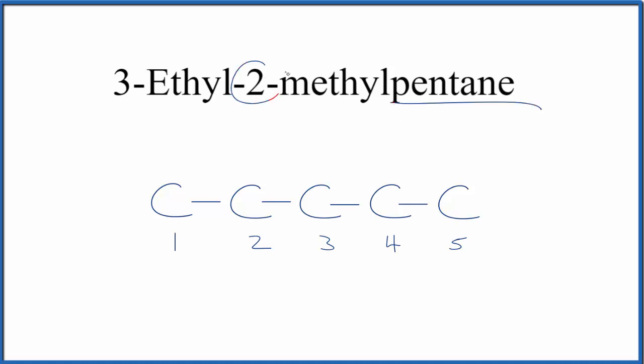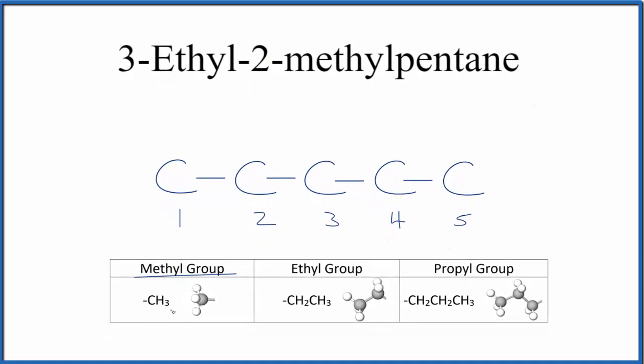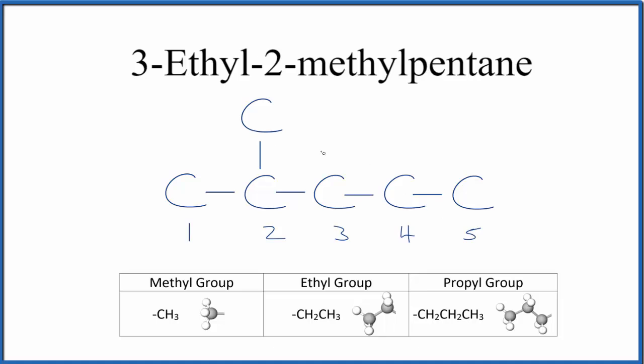We can see then that on the second carbon, carbon number two right here, we have a methyl group. A methyl group is just another carbon with hydrogens around it. So on the second carbon here in pentane, we're going to put a methyl group. That looks like this. So far we have our 2-methylpentane.